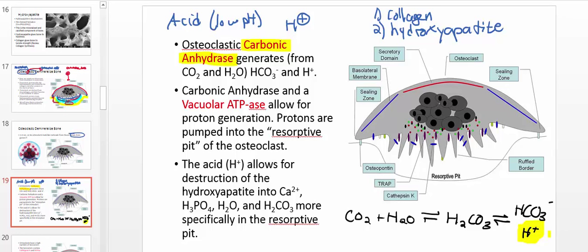The major way hydrogen ions are generated is by using something called a vacuolar ATPase. The vacuolar ATPase allows for proton generation, and those protons are pumped into the resorptive pit. So the area between the osteoclast and the bone essentially fills up with hydrogen ions.